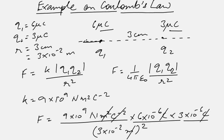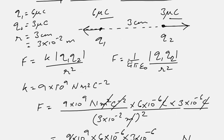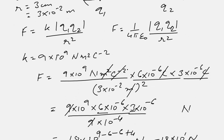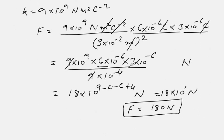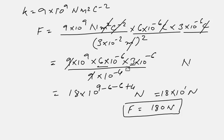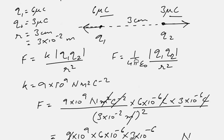So force on q1 due to q2 will be away from q2. Force on q2 due to q1 will be away from q1. The magnitude of force is given by this equation, which comes out to be 180 N. So force on q1 and q2 both have the magnitude 180 N and the directions as shown in this figure.